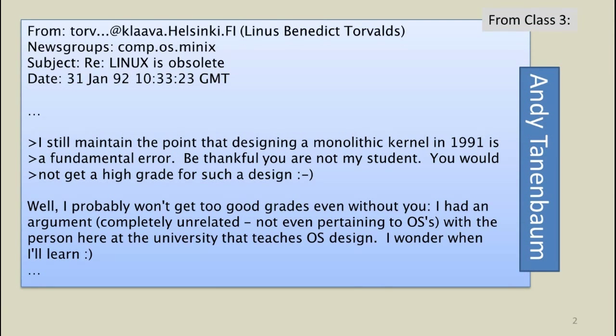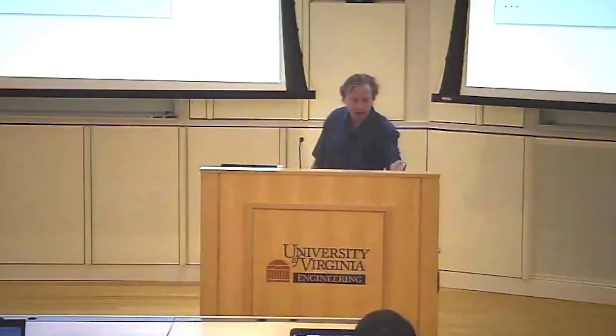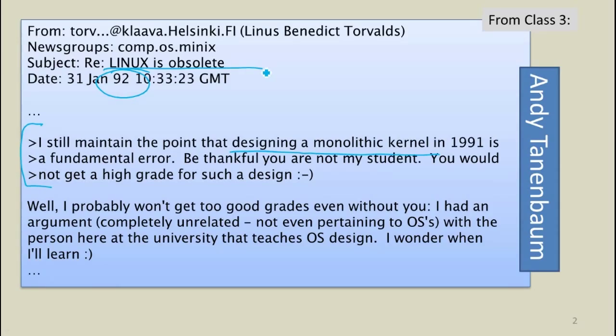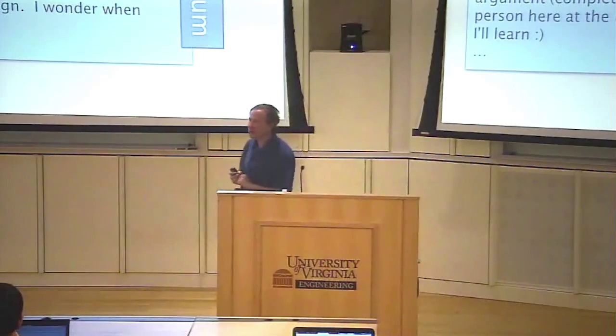If you remember way back at the beginning of the semester — this was class 3 — I showed you this email message from Linus Torvalds, who created Linux, with an excerpt from Andy Tanenbaum claiming that designing Linux as a monolithic kernel was a fundamental error. This was back in 1991, and he said Linux would not have gotten a good grade. It was an email chain from 1992 saying Linux was obsolete. Torvalds responded that maybe he'd learn someday. If Linux was obsolete in 1992, something must have gone very wrong, given that all of our Android phones are still running Linux.